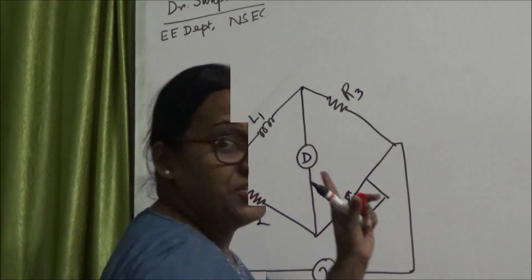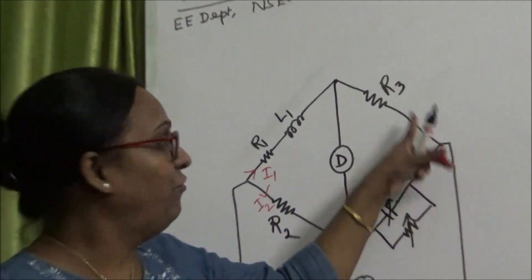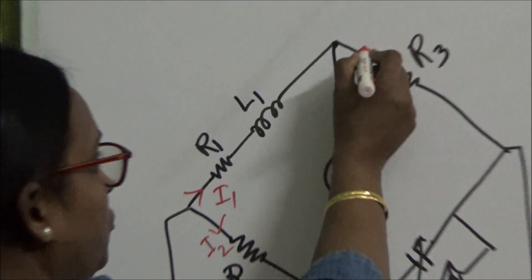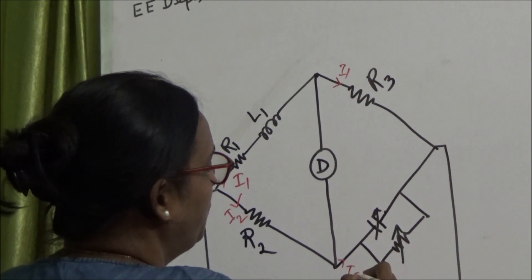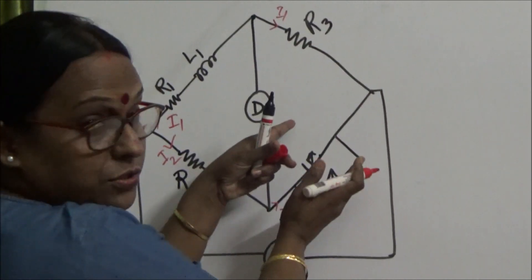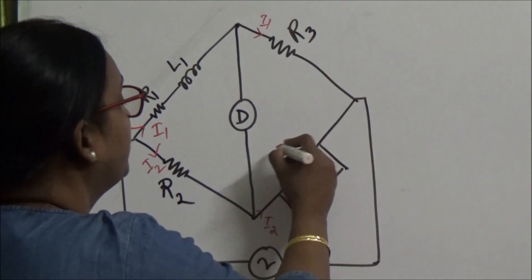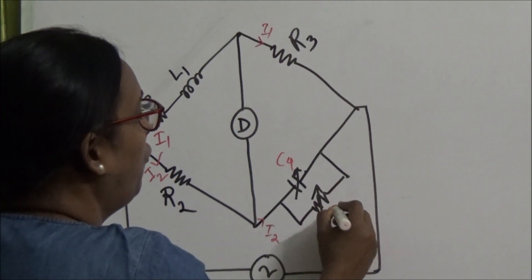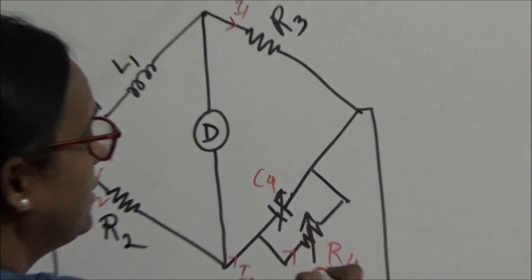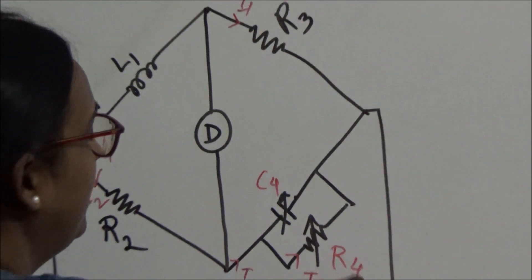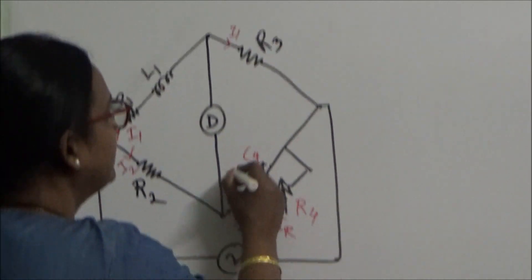At balanced condition the same current will flow through R3. So this is my I1 and this is my I2. There is a parallel path with capacitance C4 and resistance R4. Current through resistance R4 is IR and current through the capacitance is IC.